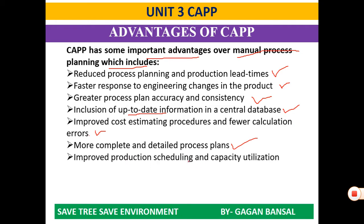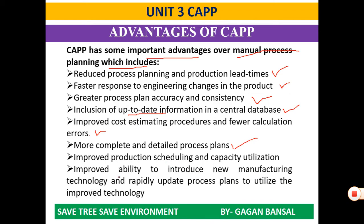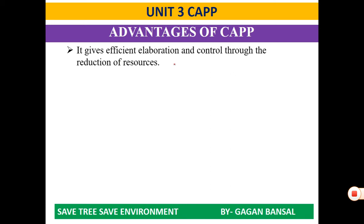More complete and detailed process plans can be achieved with the help of CAPP. Improved production scheduling and capacity utilization, and improved ability to introduce new manufacturing technology — as we have studied in group technology. Also, it gives efficient elaboration analysis, and on the existing system we can update and manipulate the procedures as well as the process, providing the improved ability to rapidly update process plans to utilize improved technology. It also provides efficient elaboration and control through the reduction of resources, helping reduce parts that are not required.